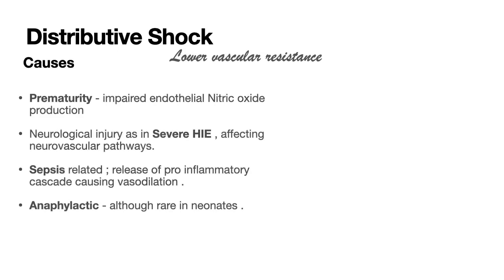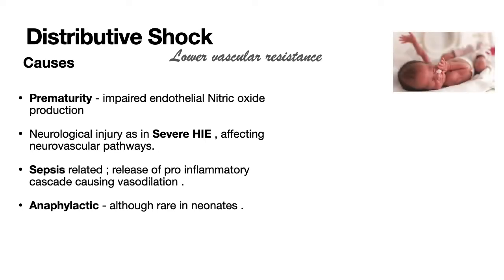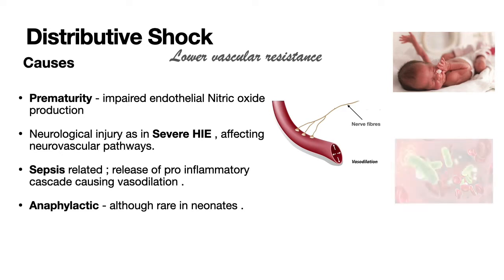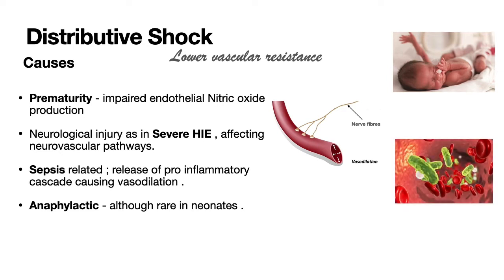Distributive shock is due to lower vascular resistance. The causes are prematurity due to impaired nitric oxide production, neurological injury as in severe hypoxia affecting neurovascular pathways, septic shock due to inflammatory markers, and anaphylaxis.